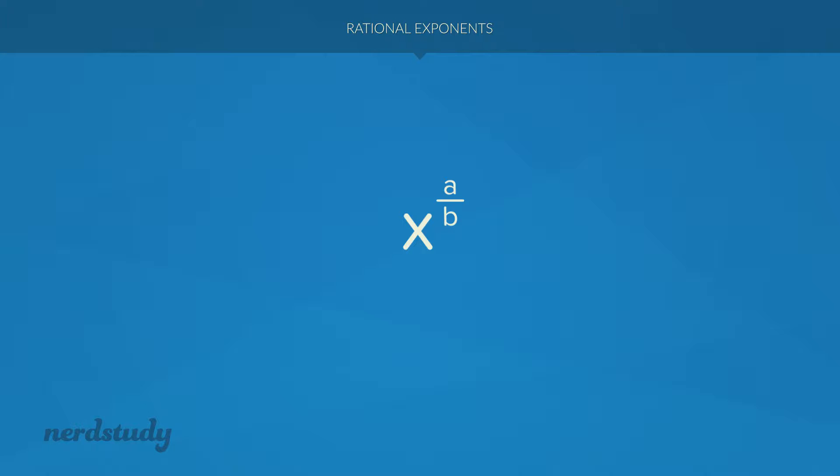For example, if we have something like 4 to the exponent 1 over 2, what would that be? It's certainly difficult to understand what this would mean, but there is another equivalent form that might help us to understand what this means. Now, this over here is equal to this. So notice how this exponent over here has a numerator of 1 and a denominator of 2.